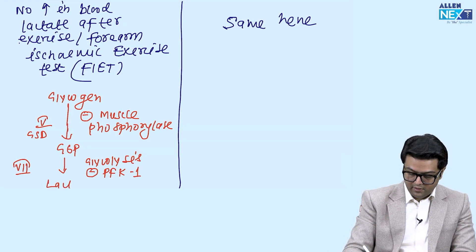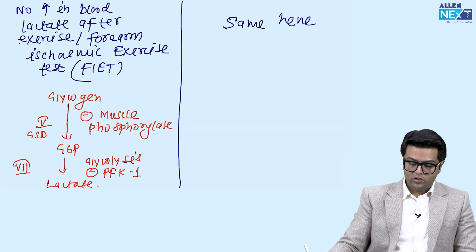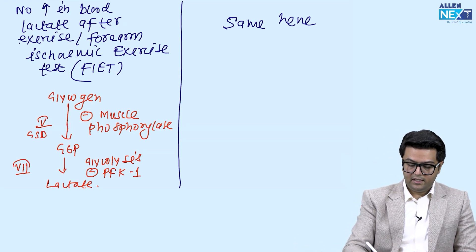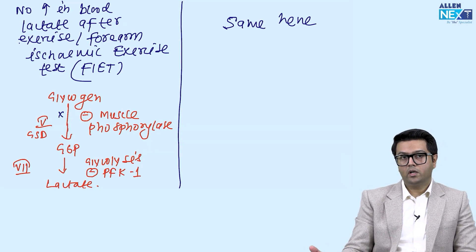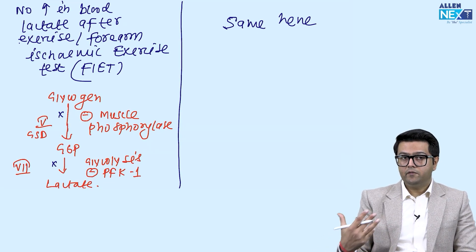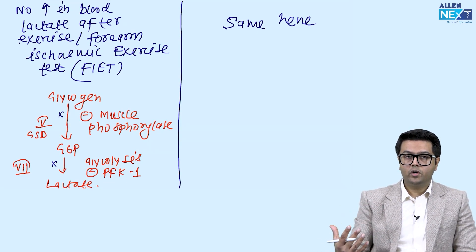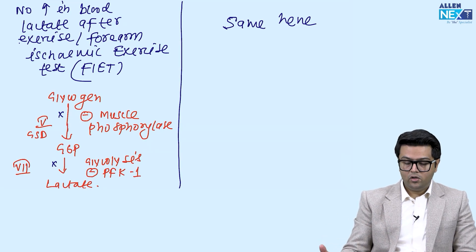After the pyruvate, there is a formation of lactate. So, there is no formation of lactate. In type 5, there is a block here. Glycogen not broken at all. In type 7, there is a block here. Even if the glycogen is broken, there is no use in the glycolysis. Lactate will not be produced.